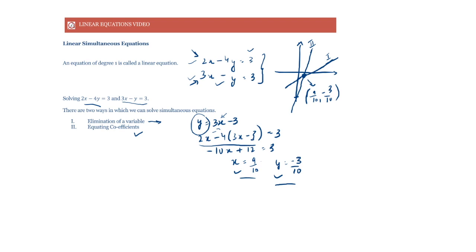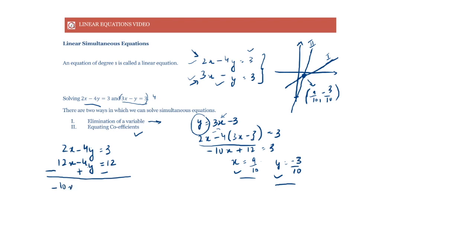We can also equate coefficients. We have 2x minus 4y equals 3, and 3x minus y equals 3. We multiply the second equation by 4 to get 12x minus 4y equals 12. We do this because now the coefficients of y are the same — both are 4. Now if we subtract the first equation from this one...